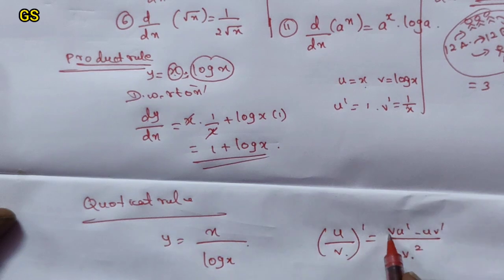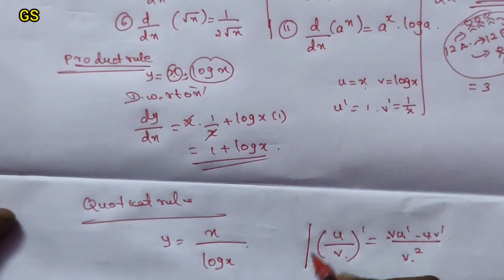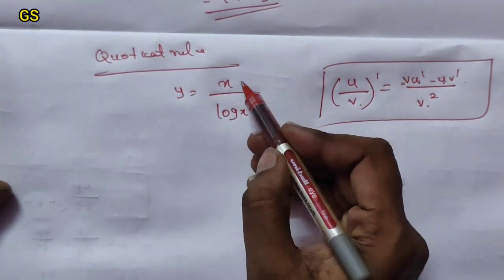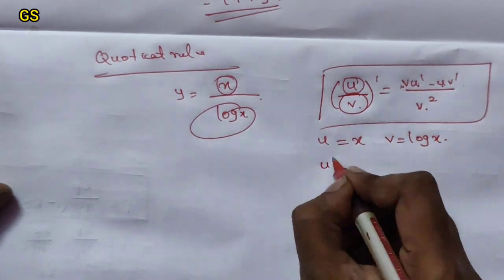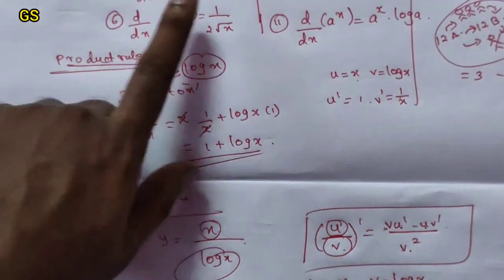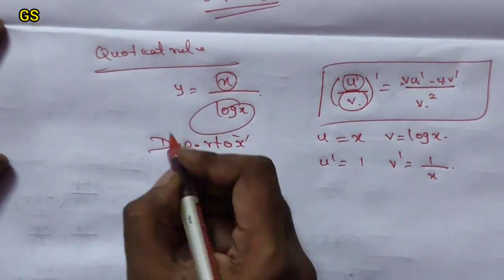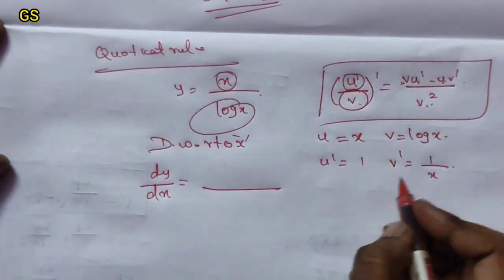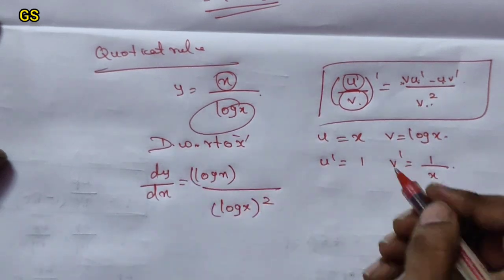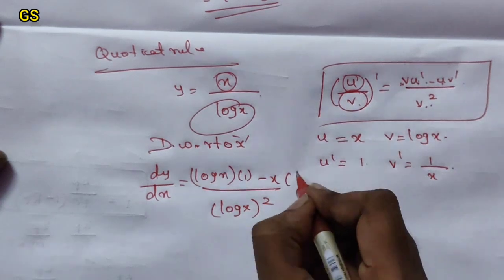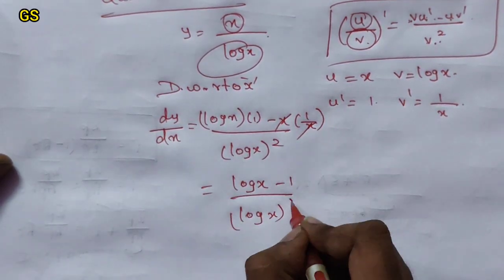Here, v squared means log x whole squared. u is the numerator x, and v is the denominator log x. So u dash — differentiate x — gives 1. v dash — differentiate log x — gives 1 by x. Applying the formula: dy/dx equals log x into 1 minus x into 1 by x, all divided by log x whole squared. After cancellation, the answer is log x minus 1 over log x whole squared.